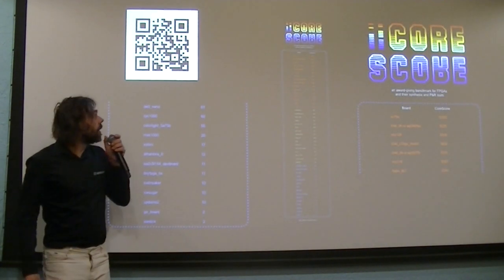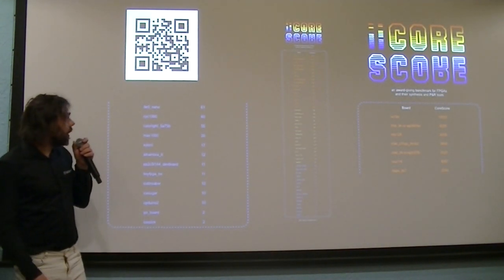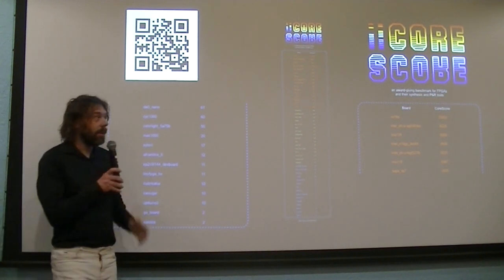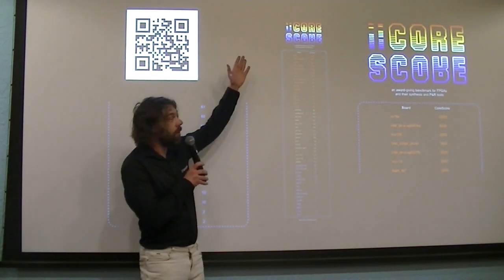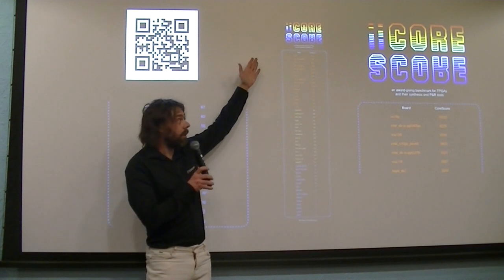And that kind of things went out of control. So I started CoreScore, which is a project to calculate how many RISC-V cores, or how many SERV cores you can fit into different FPGAs.